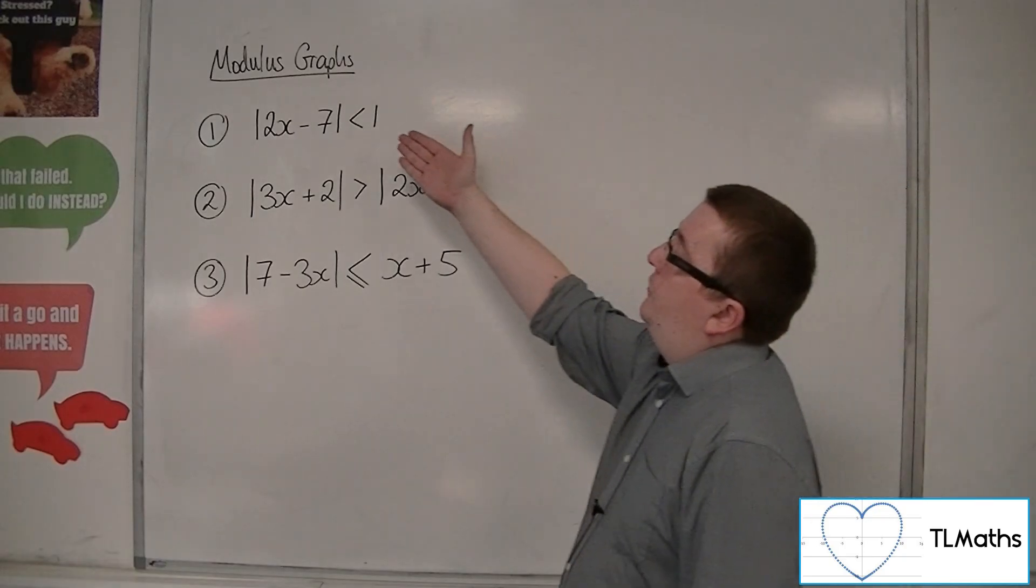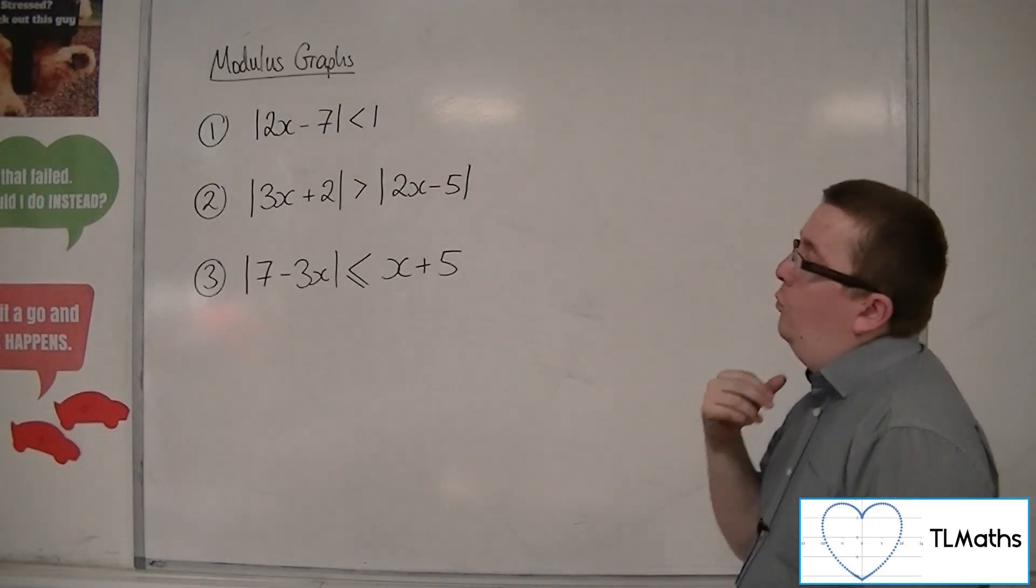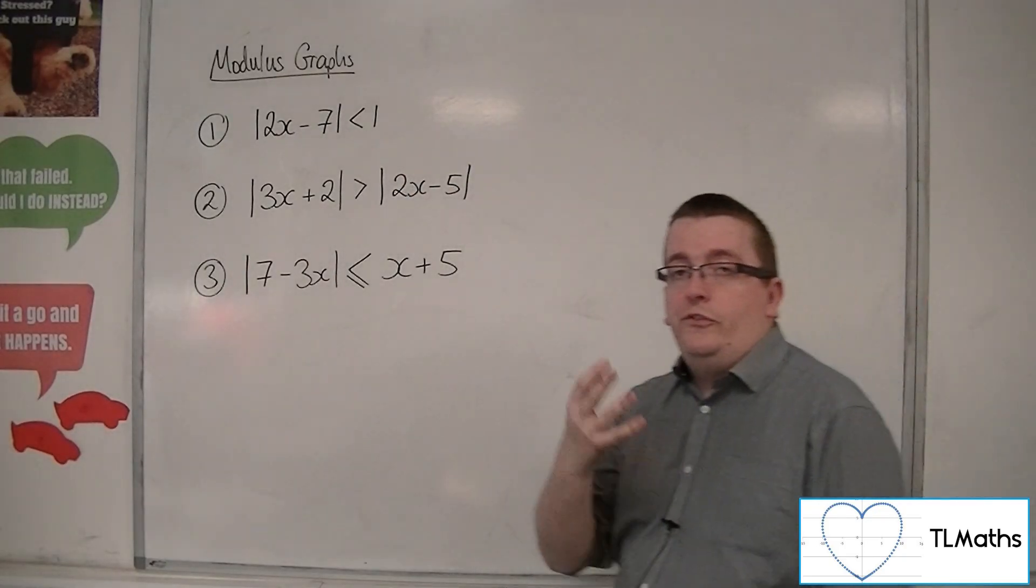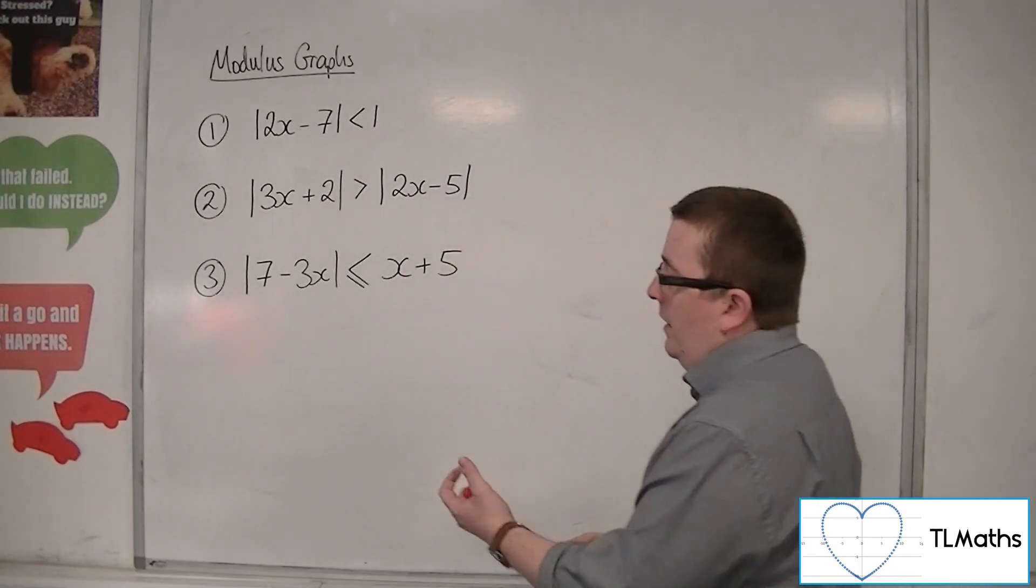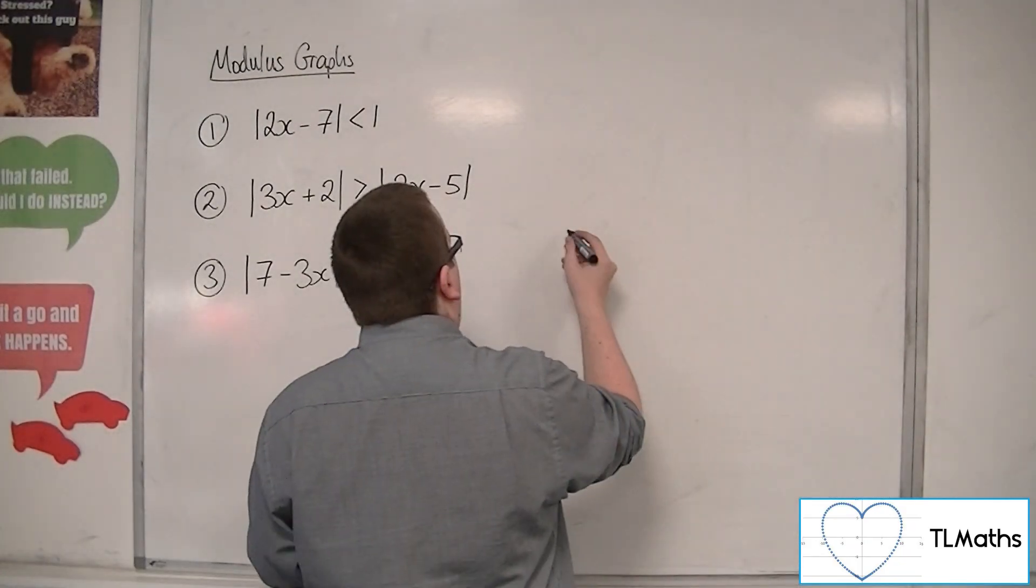If I start off with mod of 2x minus 7 is less than 1, what I want to do is I want to sketch the modulus of 2x minus 7. I want to know what it looks like.